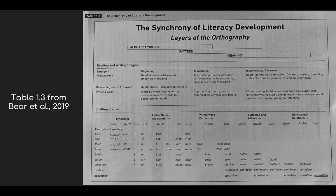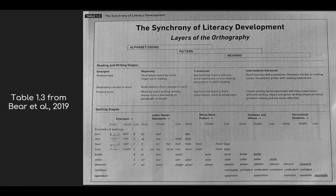Another framework is the synchrony of literacy development and the layers of the orthography outlined in Bear et al. 2019 in Words Their Way. The text shares that there is a level of synchrony, or simultaneous development, that occurs with reading, writing, and spelling skills, as depicted in the table. Bear et al. 2019 placed students in one of four stages of reading and writing development. The emergent stage is where students pretend read, develop concepts of print, and pretend write. The beginning stage is characterized by students beginning to read aloud word by word using finger pointing, and learners utilize word-by-word writing, gradually increasing to a few words to a paragraph in length.